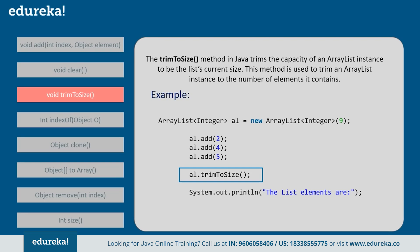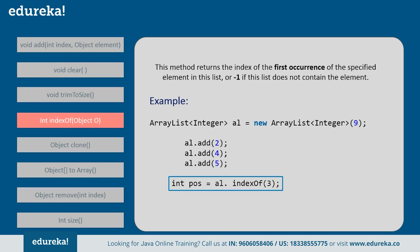Next is trimToSize(). This method trims the capacity of an ArrayList instance to the list's current size. For example, if you create an ArrayList of size 9 but add only three elements, calling trimToSize() reduces the ArrayList size from 9 to 3 — that is, it reduces it to the number of elements it actually contains. Next is indexOf(). This method returns the index of the first occurrence of the specified element in the list. If that element is not present, it returns -1. For instance, if you search for the index of element 5 in the list, it returns the correct index. But if you search for an element not present in the ArrayList, it returns -1.